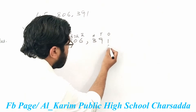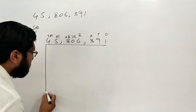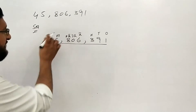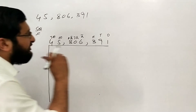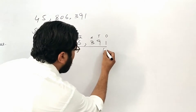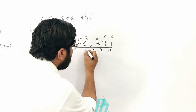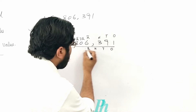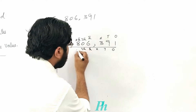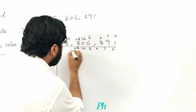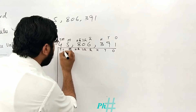Now we have a table. We will make a table for the number. The columns are: ones, tens, hundreds, thousands, ten thousands, hundred thousands, millions, and ten millions.